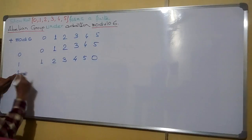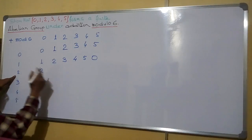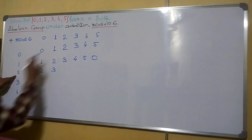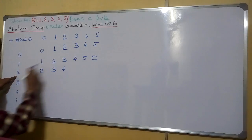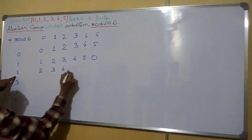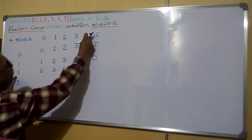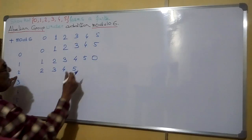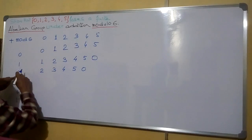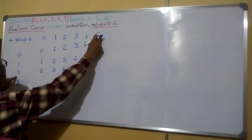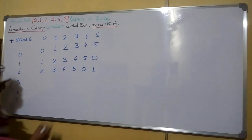2 plus 0 is 2; the remainder is 2. 2 plus 1 is 3; the remainder is 3. 2 plus 2 is 4; the remainder is 4. 2 plus 3 equals 5; the remainder is 5. 2 plus 4 equals 6; dividing by 6 the remainder is 0. And 2 plus 5 is 7; dividing by 6 the remainder is 1.